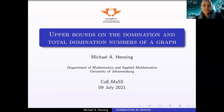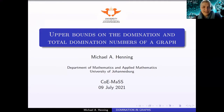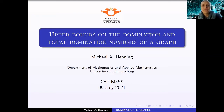Today's speaker, Professor Michael Henning, obtained his doctoral degree in mathematics in 1989 from the University of Natal Durban and joined the University of Johannesburg in 2010. His main area of research is graph theory and hypergraph theory. He has published more than 500 publications, the majority on domination theory and graphs, serves on editorial boards of several prominent journals, and holds an NRF A1 rating. He joins us to present work on upper bounds on domination and total domination numbers in terms of minimum degree.